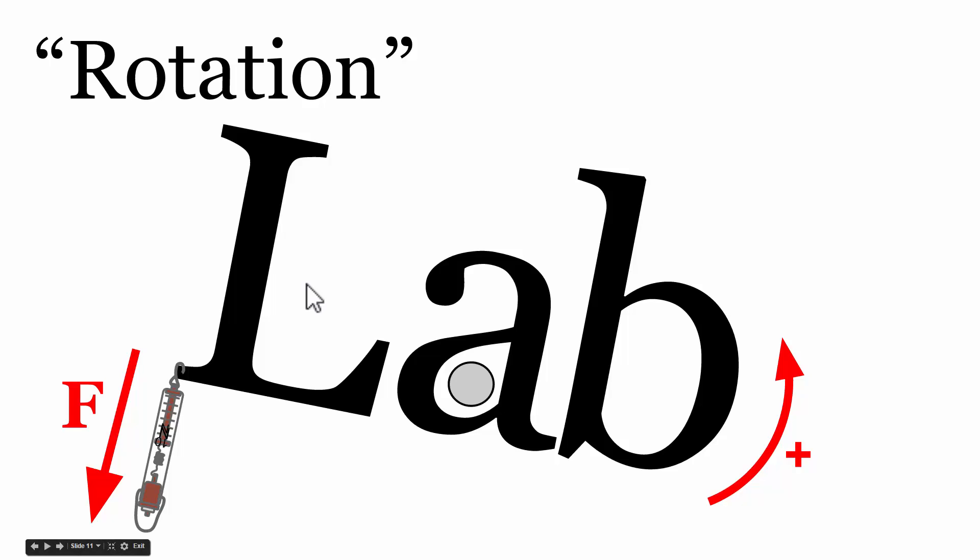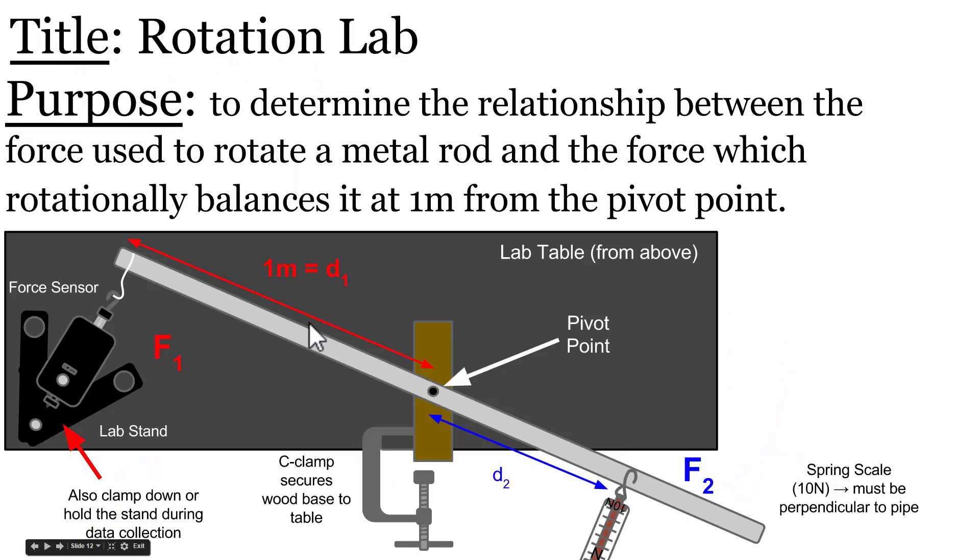In our rotation lab, we looked at the effectiveness of a force at causing the rotation of an object about some point or pivot point. Our lab setup looked like this from the top. We had a solid electrical metal conduit pipe attached exactly in the middle at some pivot point so it could freely rotate about this point.